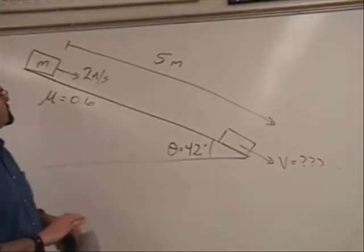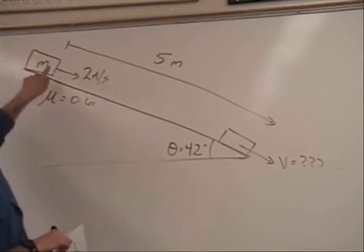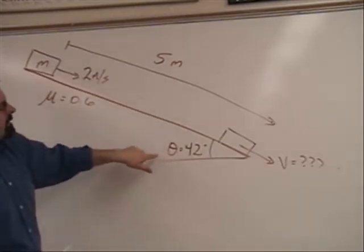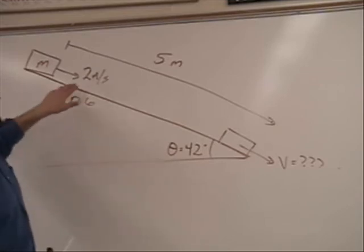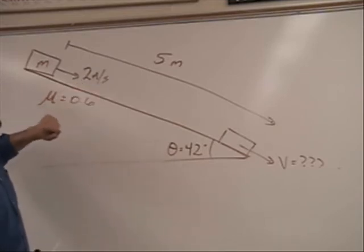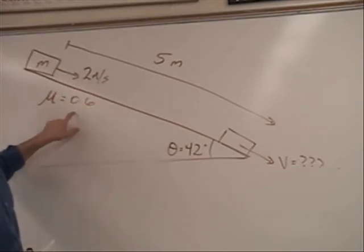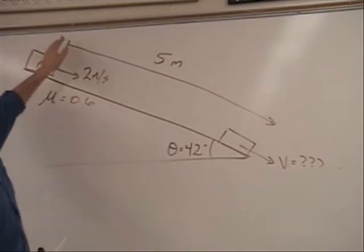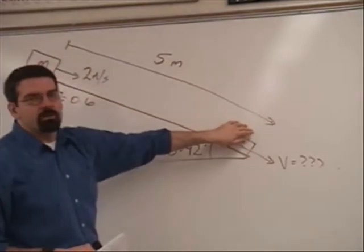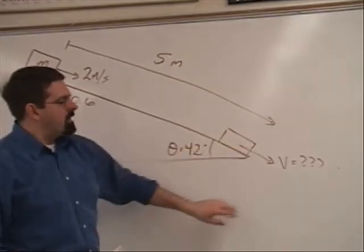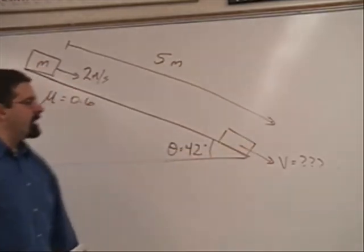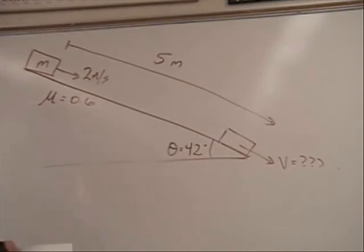Okay. Here's another example. Here we have a mass M on an incline plane whose angle is 42 degrees. The initial speed of the mass is 2 meters a second. There's friction between the mass and the plane. The coefficient of kinetic friction is 0.6. It's going to travel from here to the end of the plane, which is 5 meters long. The question is, what is the speed at the end of the plane? So let's use energy arguments here and let's work this problem together. You can work it now, pause it, and I'll come back with my answer.